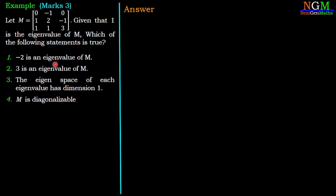The first two options are about the eigenvalues of M, and the last two options are about the eigenvectors of M. So here we are going to find the eigenvalues and eigenvectors of matrix M.